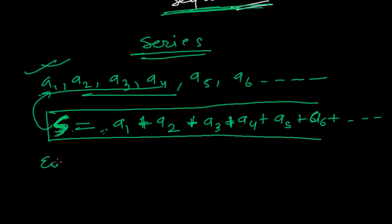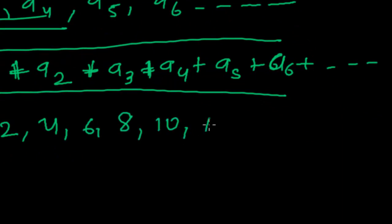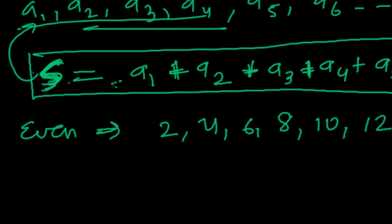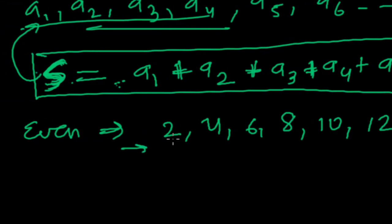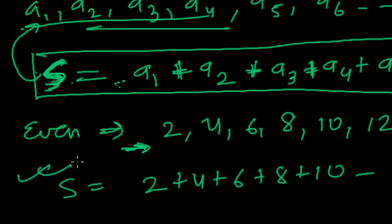For example, the even number sequence is: 2, 4, 6, 8, 10, 12, and so on. The associated series of this even number sequence is: 2 + 4 + 6 + 8 + 10 + ..., and so on. That is the most important difference between a sequence and a series.